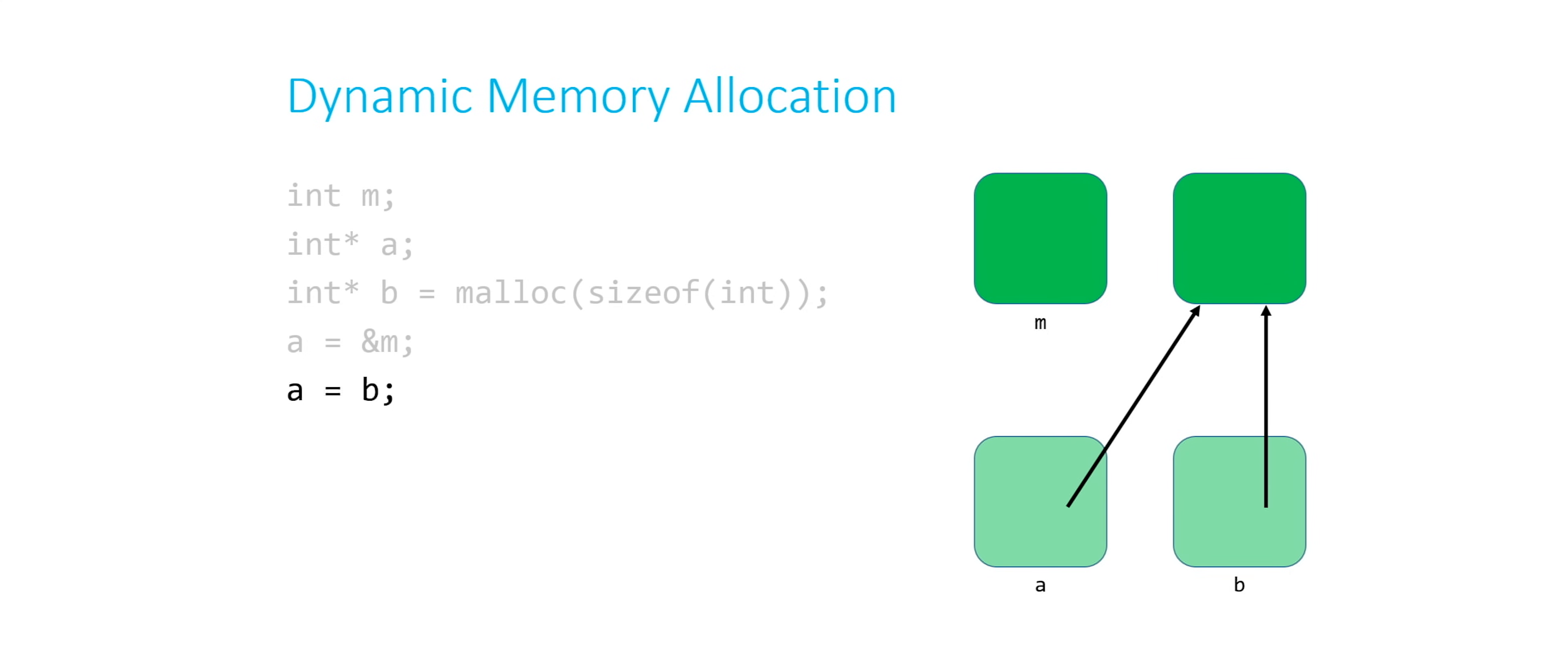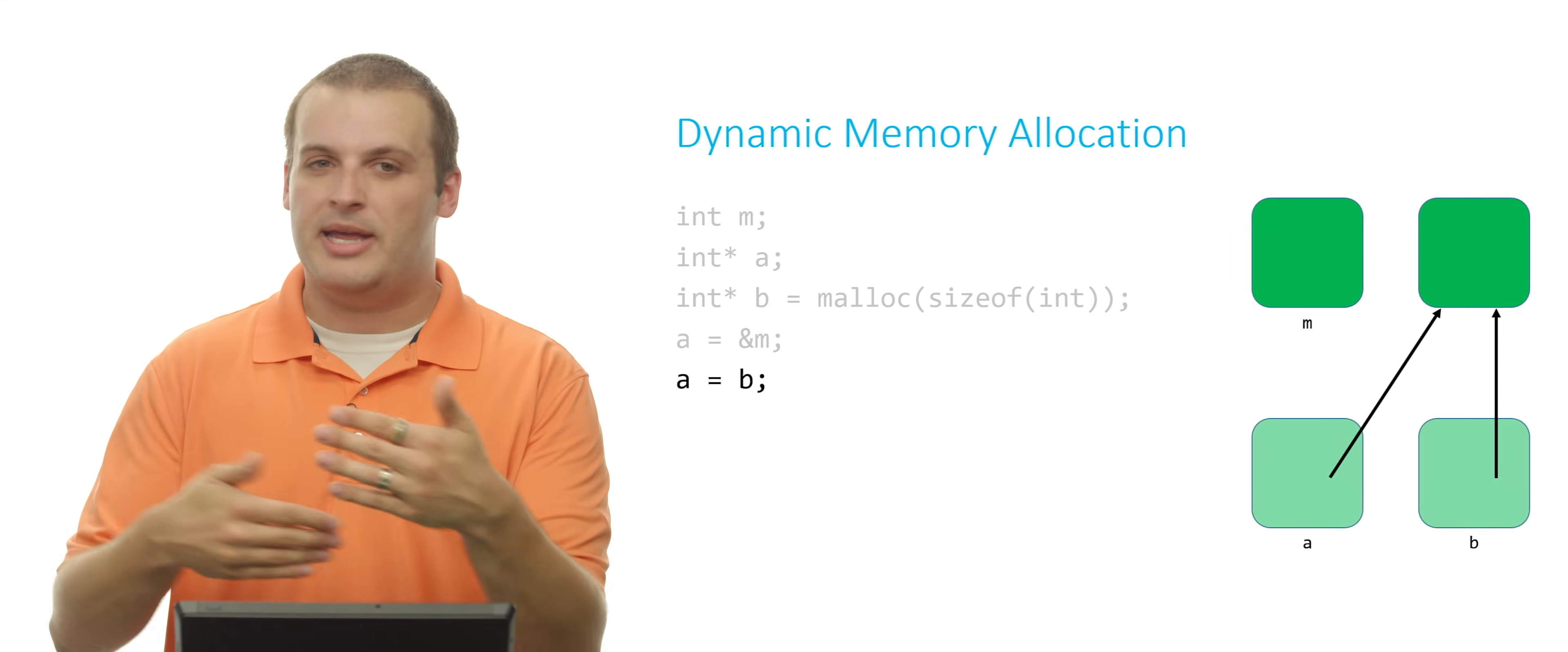Now I can reference it multiple ways. Now I can say star a or star b. I can reference it either way. Because both of those same statically declared variables point to the same location.